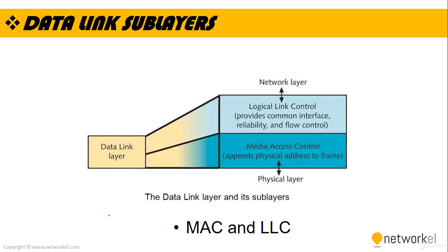The data link layer functionality is split into two logical sublayers: Logical Link Control (LLC) and Media Access Control (MAC). LLC is the upper sublayer that interacts with the network layer above, and is responsible for handling multiple layer 3 protocols through multiplexing and demultiplexing, as well as link services like reliability and flow control. MAC is the lower sublayer that interacts with the physical layer below and is responsible for framing and media access control for broadcast media.